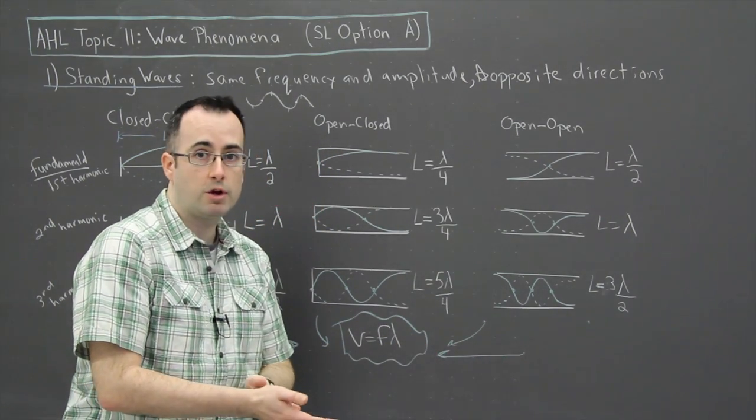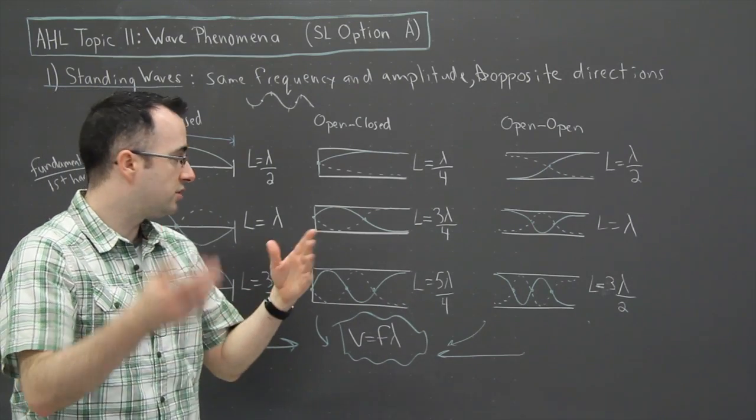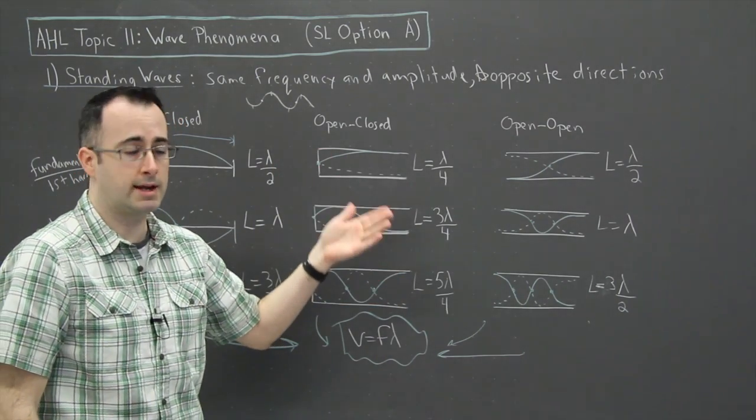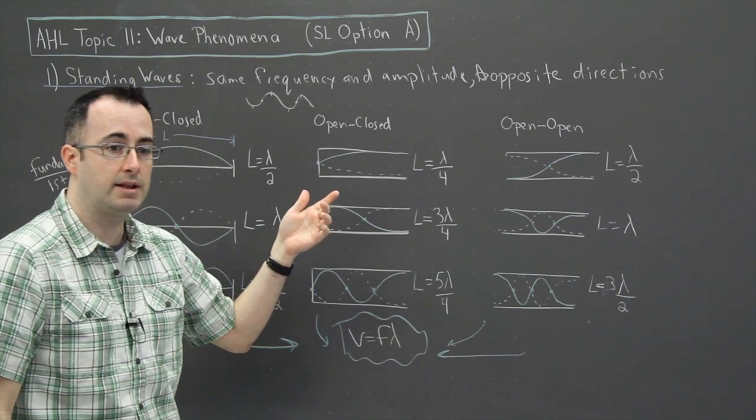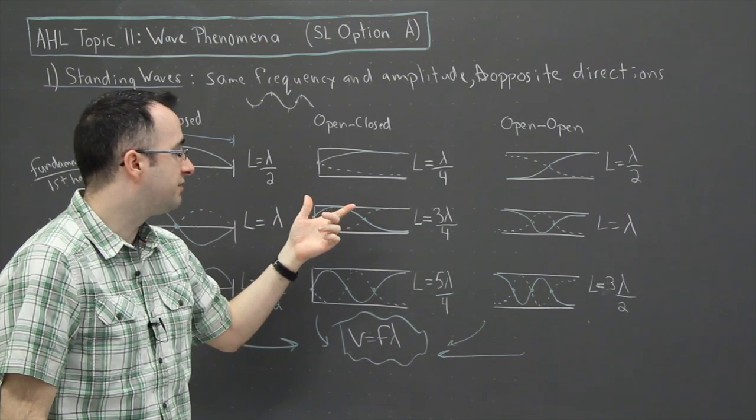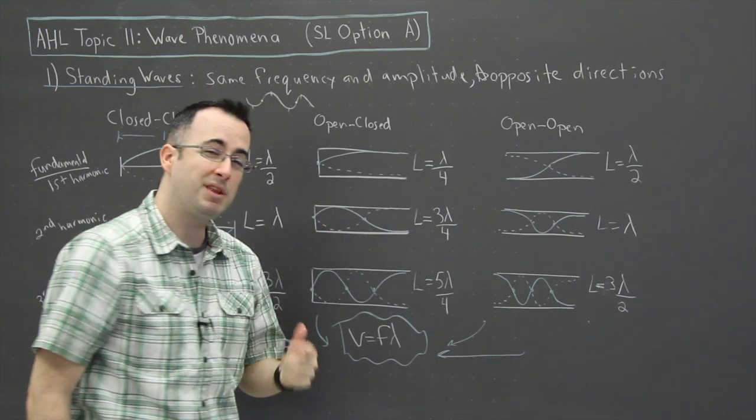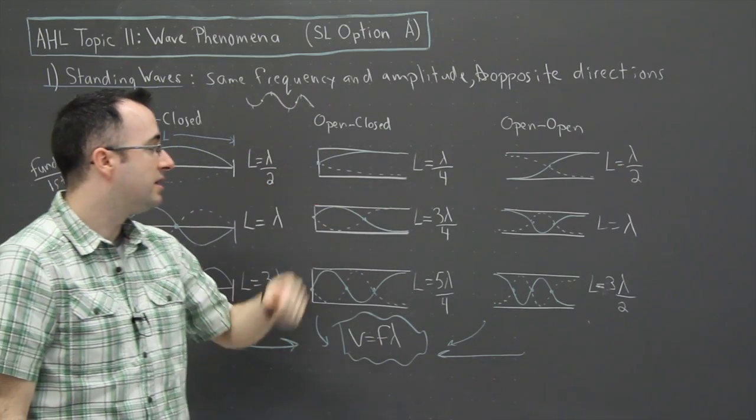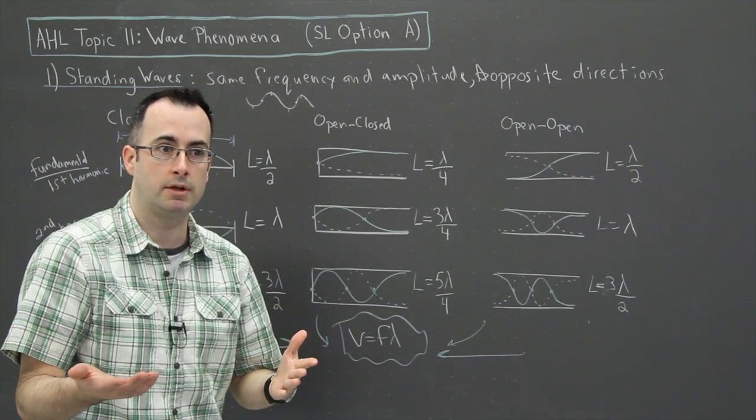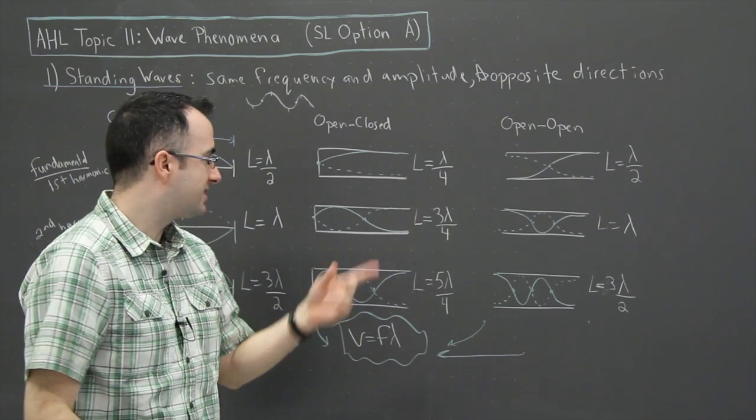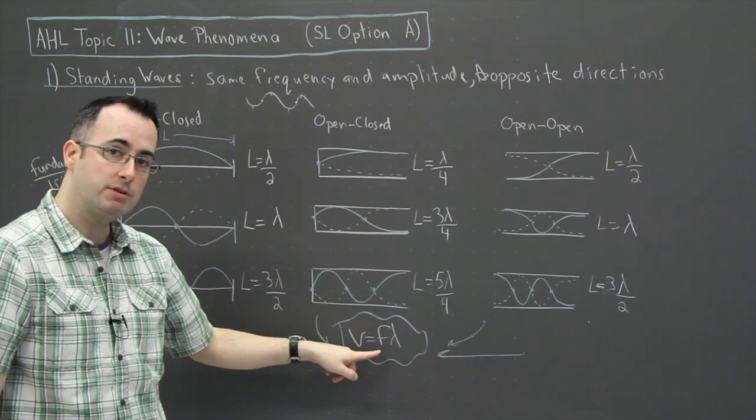So you might be given a question like, oh, in a trombone or some sort of instrument, you create the second harmonic has a wavelength of blah, blah, blah. Then they could ask you, you know, define the length of it, the length of the tube. Or maybe they do something opposite where they give you the length and they ask you, you know, how fast is the speed of sound? You're like, whoa, what? How do I get speed of sound from this? This is how. You use this equation right here.